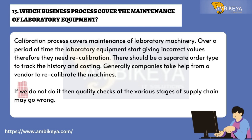Question number thirteen: Which business process covers the maintenance of laboratory equipment? The calibration process covers maintenance of laboratory machinery. Over time, laboratory equipment starts giving incorrect values and therefore needs recalibration. A separate order type is used to track history and costing. Companies generally take help from a vendor to recalibrate machines, as failure to do so may cause quality checks at various stages of the supply chain to go wrong.